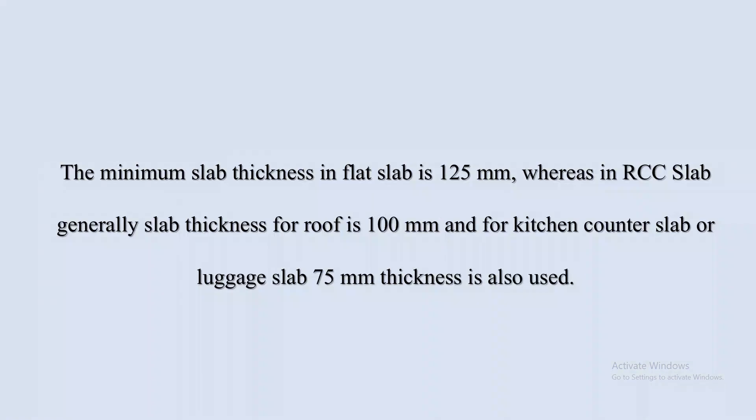The minimum slab thickness in flat slab is 125 mm, whereas in RCC slab, the thickness used for a roof is generally 100 mm and for a kitchen counter or luggage slab it is almost 75 mm.